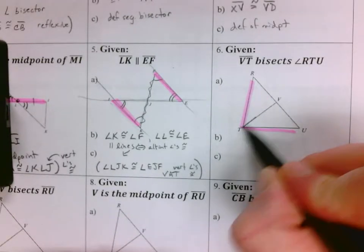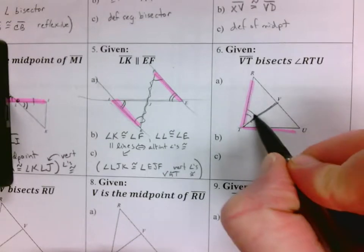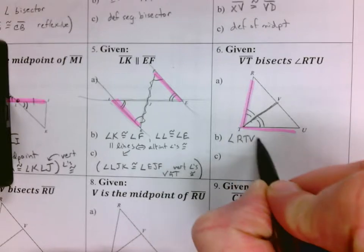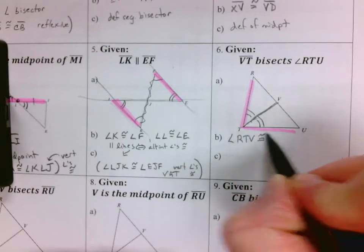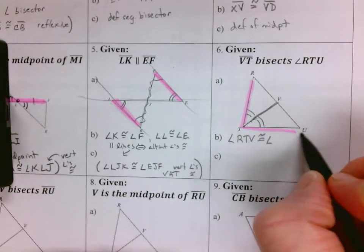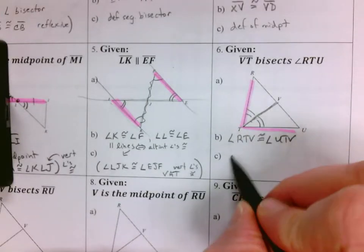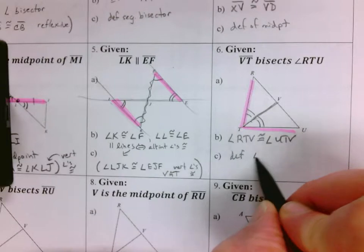Angle RTV is congruent to angle UTV, and that is the definition of an angle bisector. Cuts an angle to two congruent angles. Also, miscellaneous reason: segment TV is congruent to segment TV by reflexive.